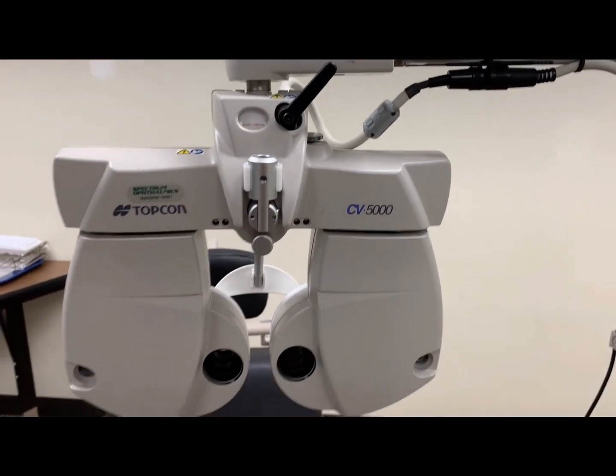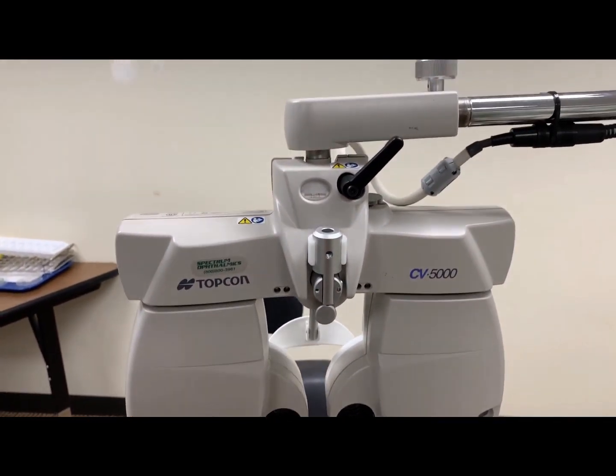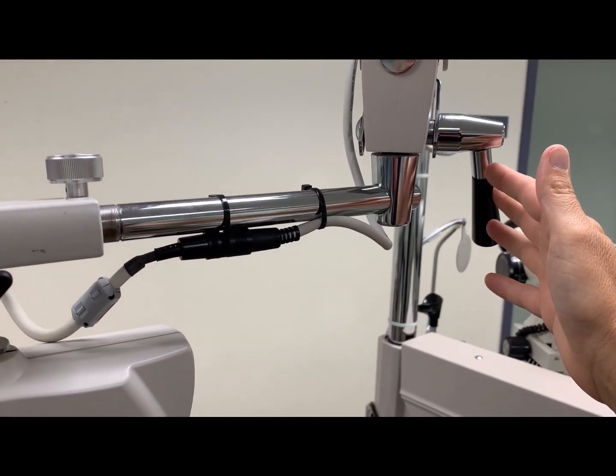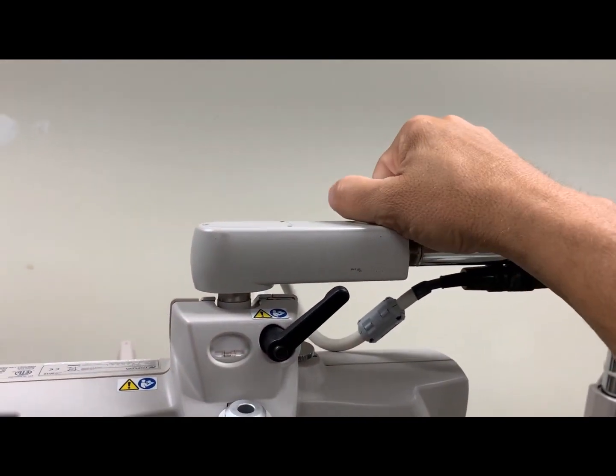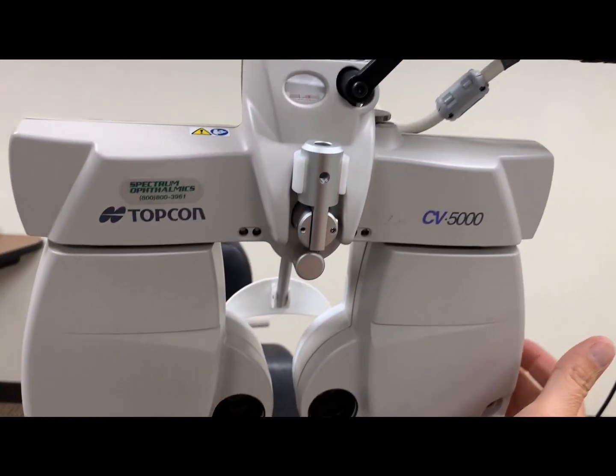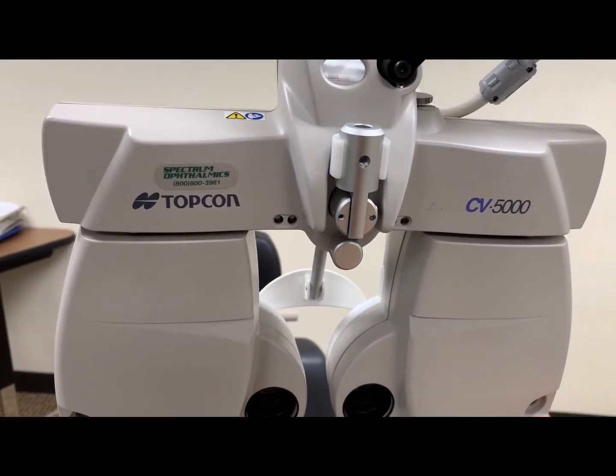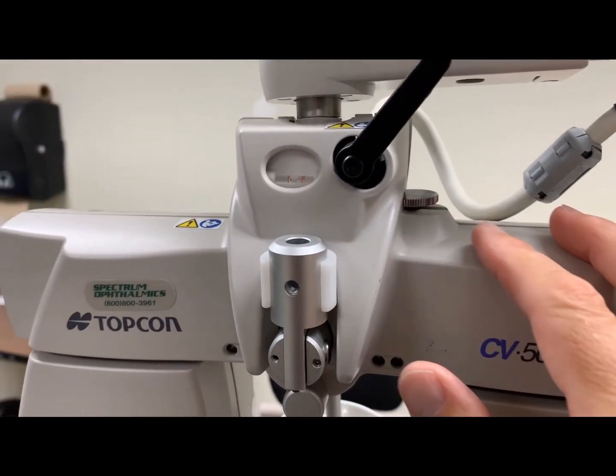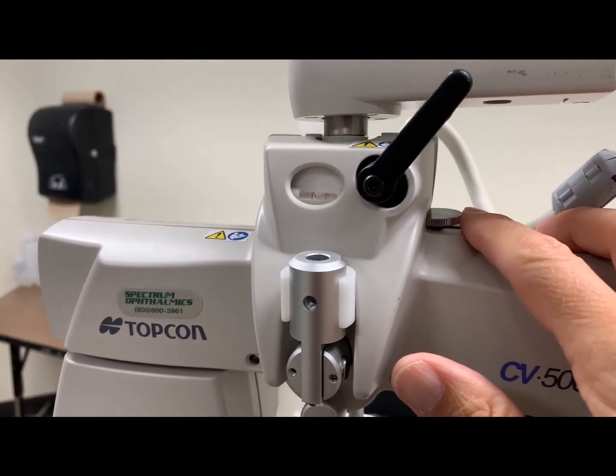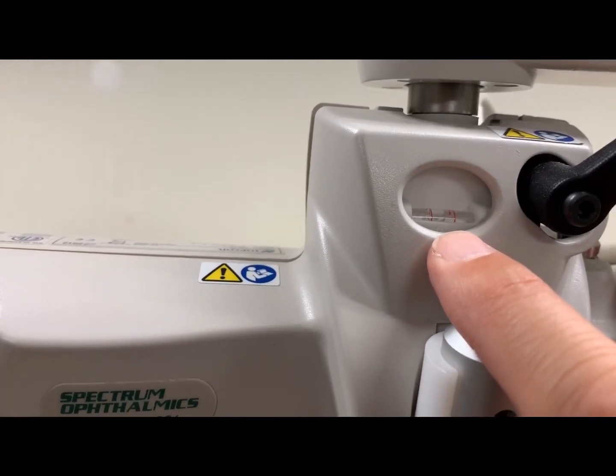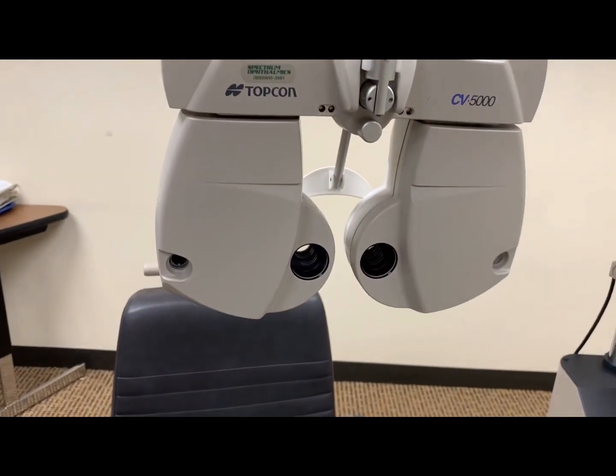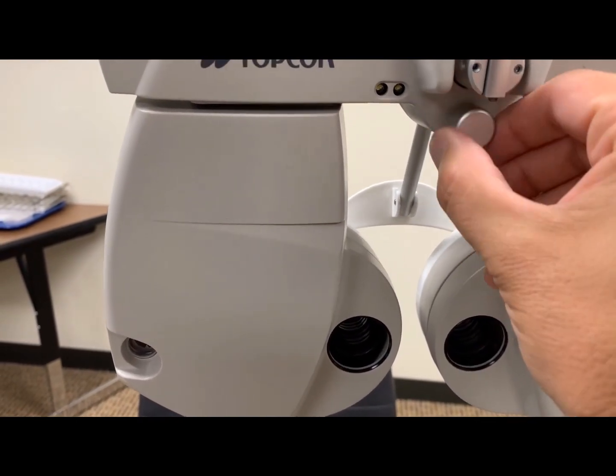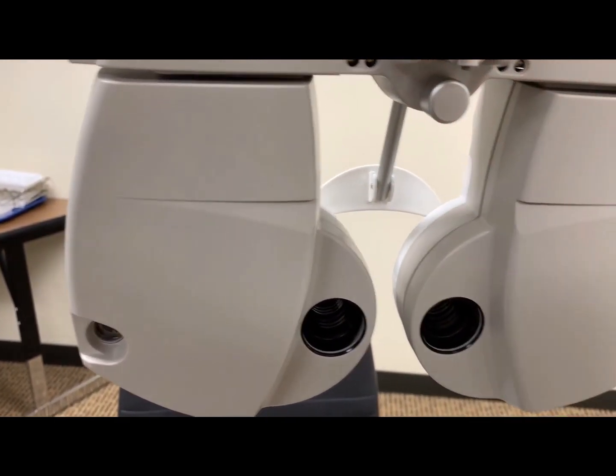This is a brief intro to the Topcon automated phoropter system. Same basic locks as before. The arm lock to swivel the instrument in front of the patient. The lock on top of here, which will allow you to either tip the bottom of the instrument closer to the patient or bring it further away from the patient. Ensure that that's locked into place. The balancing of this particular instrument occurs with the knob on the side. And you'll notice that there's a level within the instrument. Changing the forehead rest is located with this knob here. And you'll see that you're able to move the instrument further and closer to the patient.